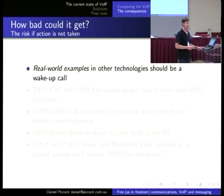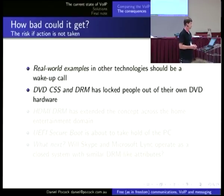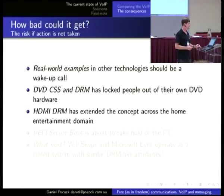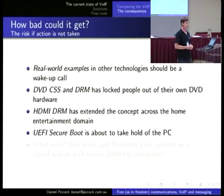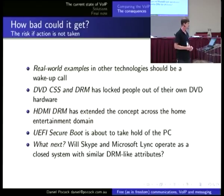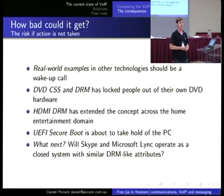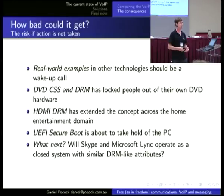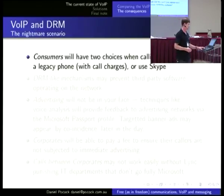Real-world examples in other domains: you've got the encryption of DVDs, HDMI using DRM to protect media, and secure boot coming to the PC to stop you running other software. What can we anticipate next? In Voice over IP, with Skype so widely deployed and Lync getting a foothold in the corporate market, could we see a similar trend where DRM could come to Voice over IP?